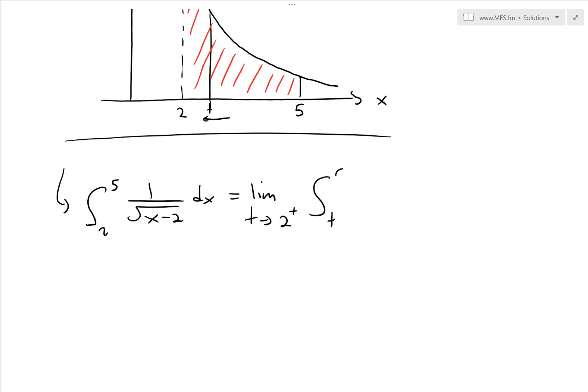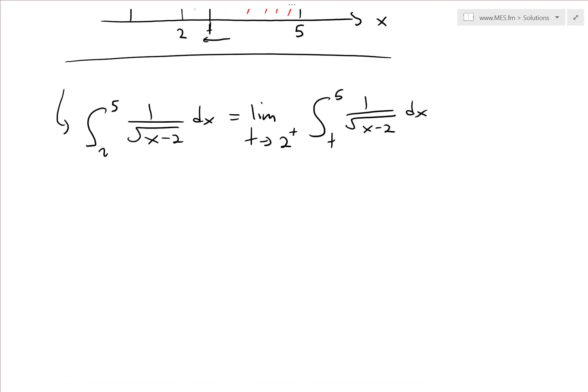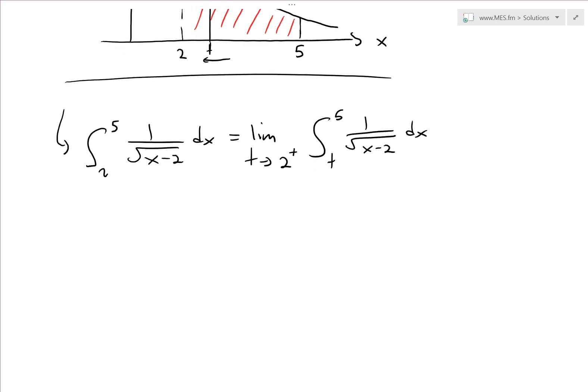Of 1 over square root x minus 2 dx. Now we can continue evaluating this definite integral, which doesn't have this discontinuity—we're dealing with a variable t.